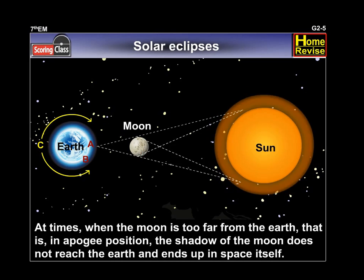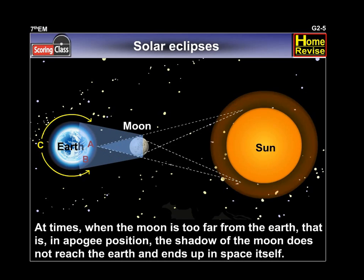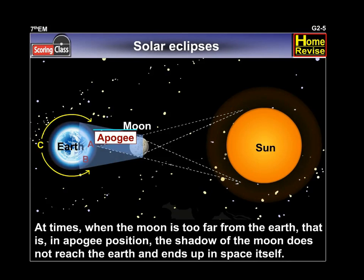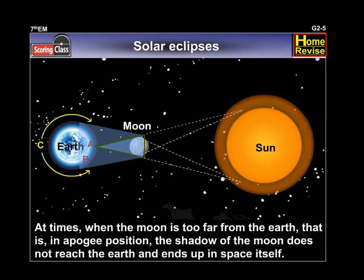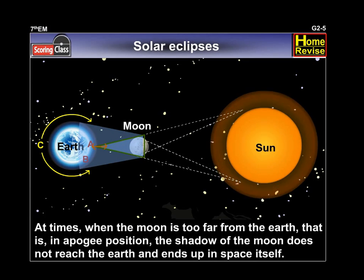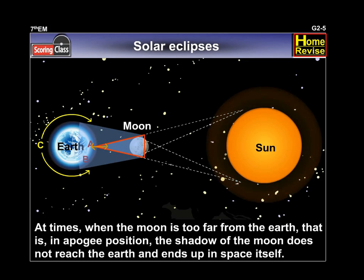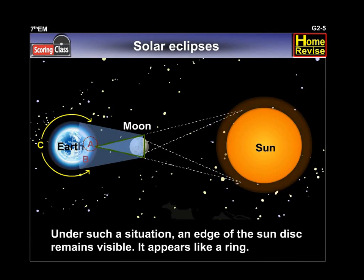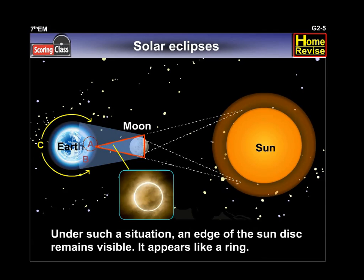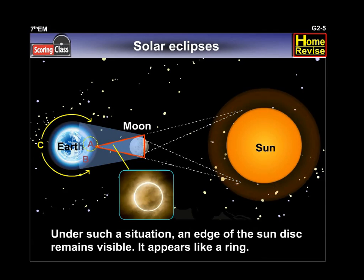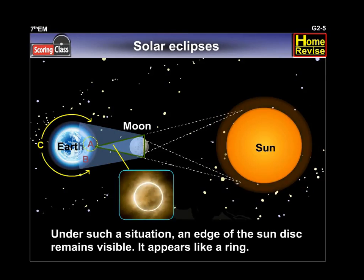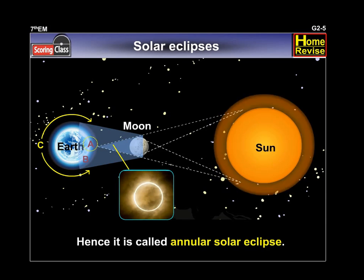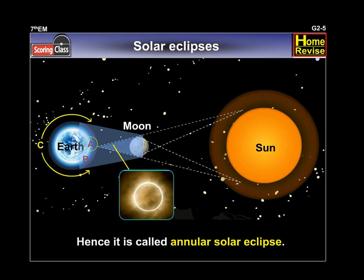At times, when the moon is too far from the earth, i.e. in apogee position, the shadow of the moon does not reach the earth and ends up in space itself. Under such a situation, an edge of the sun disk remains visible. It appears like a ring. Hence, it is called annular solar eclipse.